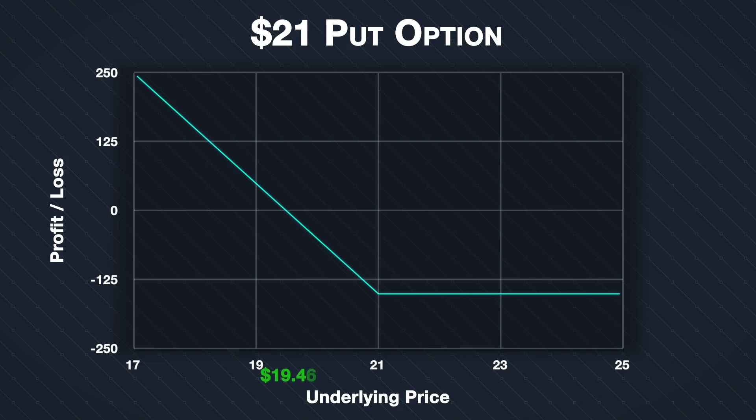This means that if the price of SLV is exactly $19.46 when the put option expires, the trade will have made precisely $0 — no profit, but no loss either.